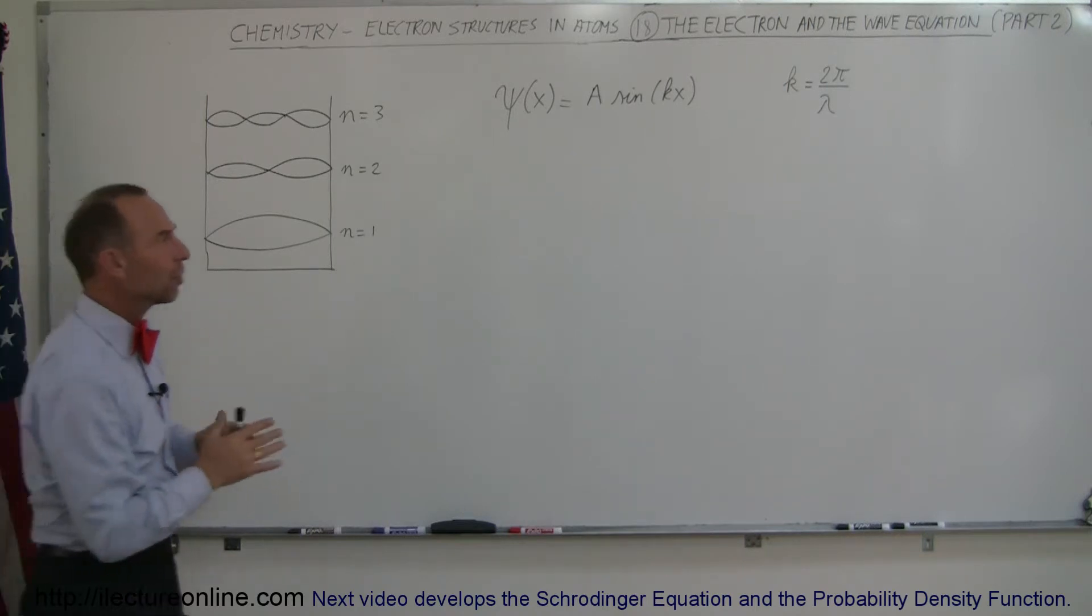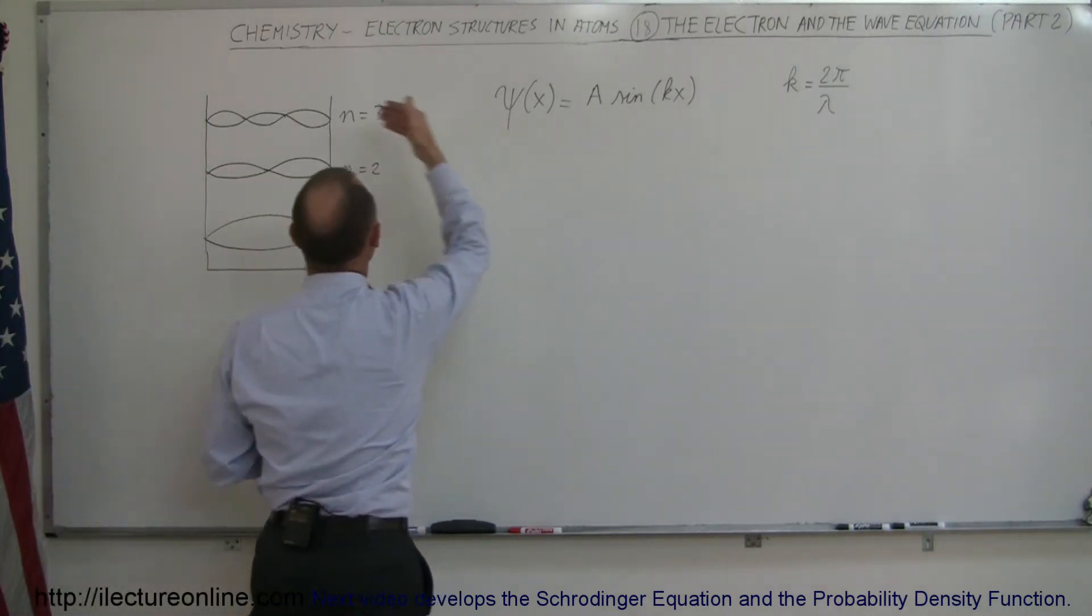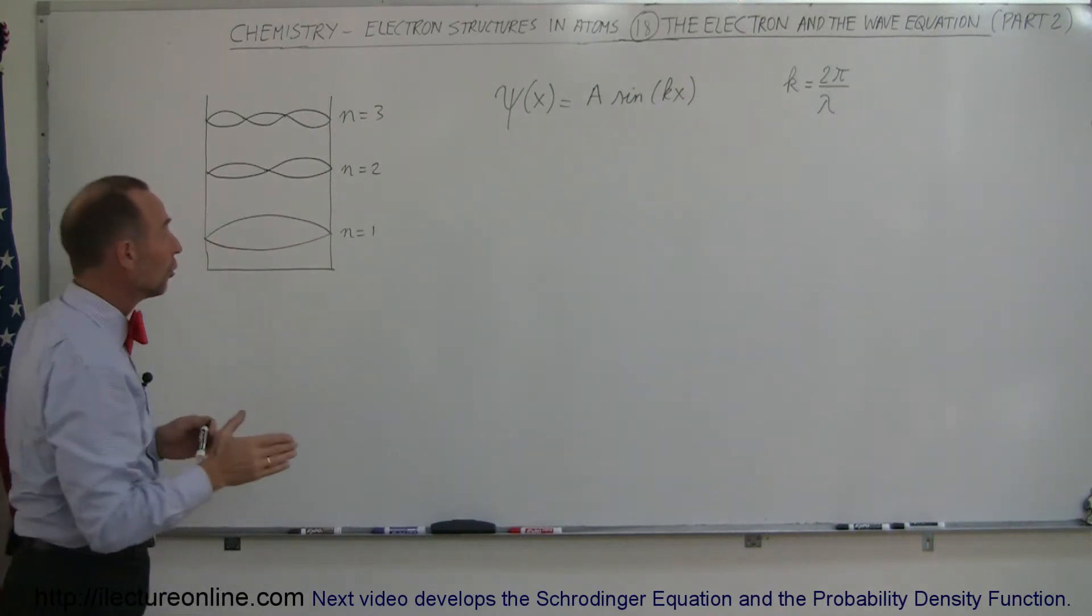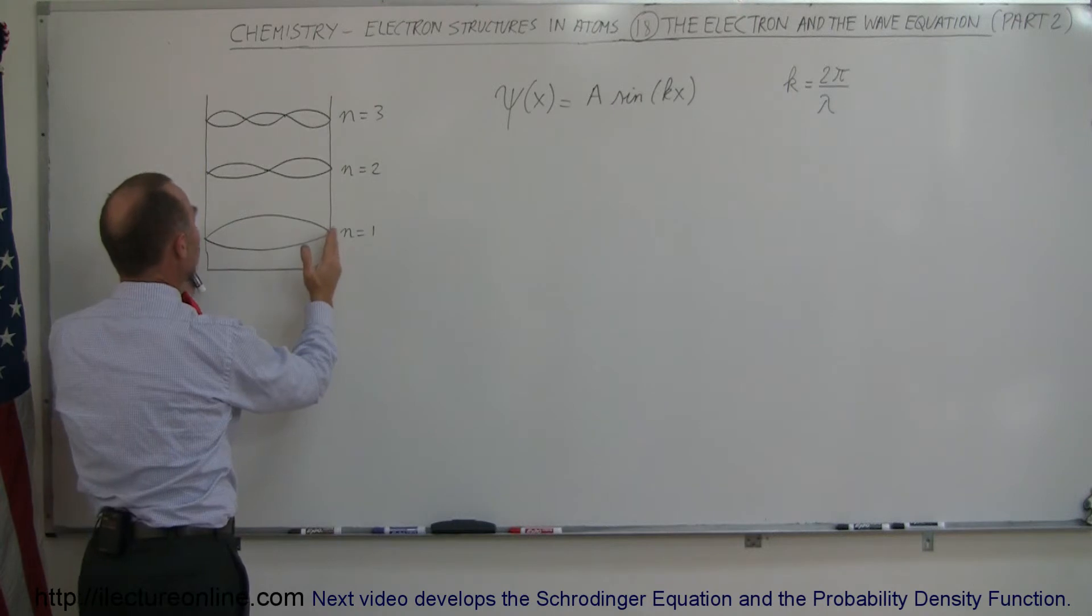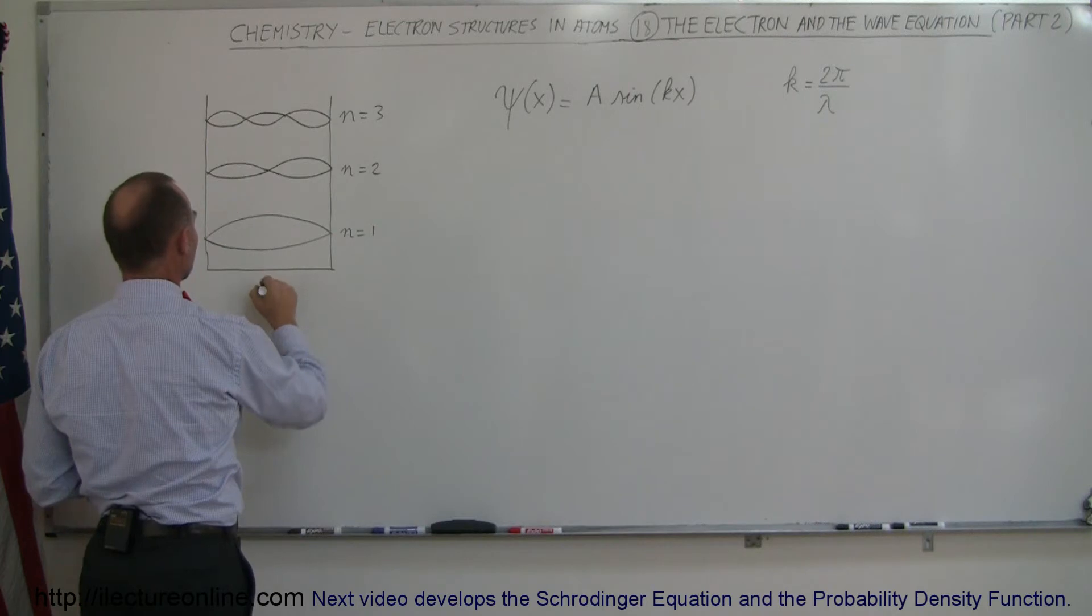But we want to now adapt our general equation into a specific equation for the different quantum states. Notice that in the lowest quantum state, n equals 1, the wavelength is twice the size of the box. If this is the length of the box,